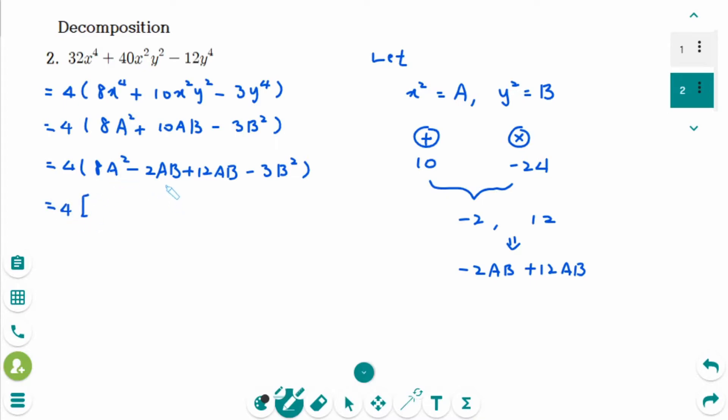And then factor out 2A in the first two terms. So 2A and left over is 4A minus B. And then this one is 3B in the last two terms. So 4A minus B is left over.